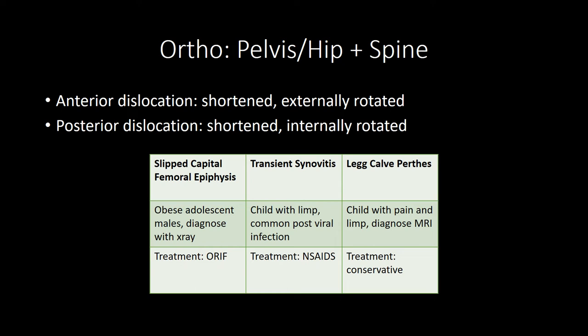Transient synovitis presents as a child with a limp, often following a viral infection, trauma, or vaccination. Rule out septic arthritis with CBC, ESR, and CRP; treatment is NSAIDs. Septic arthritis is most commonly due to Staph aureus and is diagnosed via needle aspiration. Legg-Calvé-Perthes disease is avascular necrosis of the femoral head in children ages 4–6, presenting with pain and limp. X-ray is often negative — get an MRI or bone scan. Treatment is conservative.